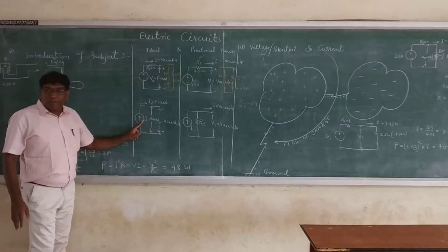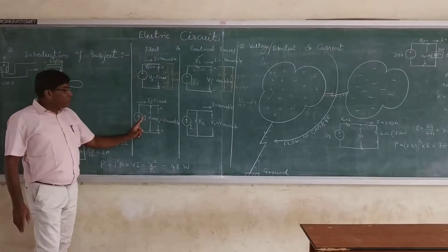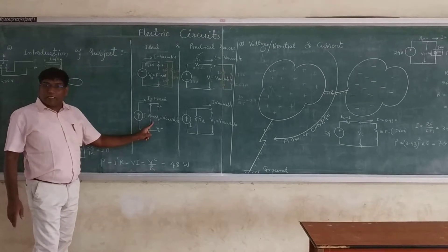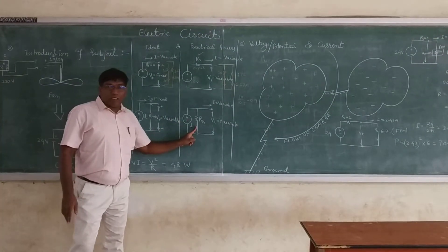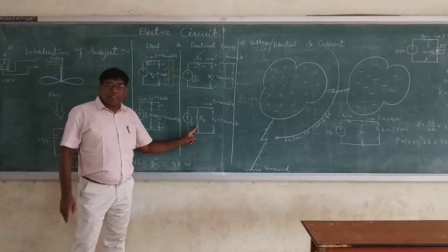Coming to the current source, in an ideal current source, the internal resistance is infinite, while in a practical current source, this resistance is finite.